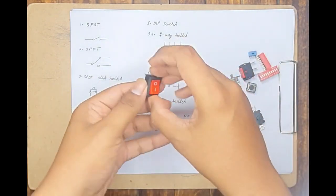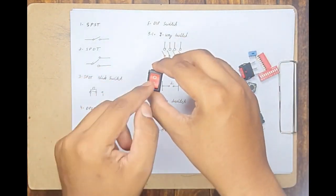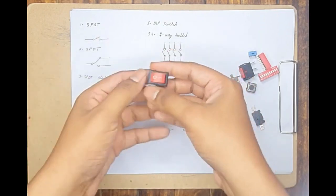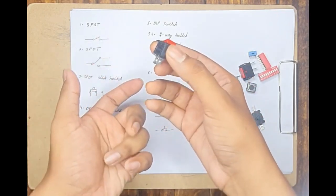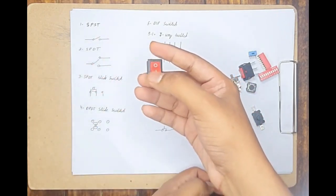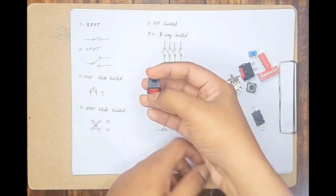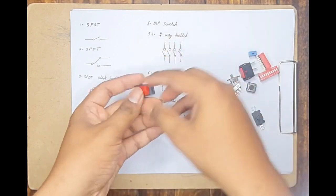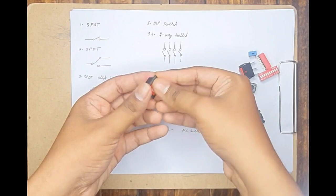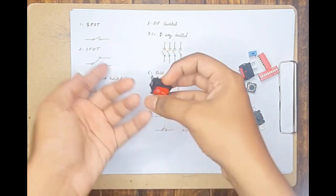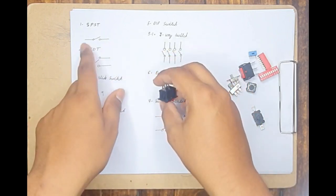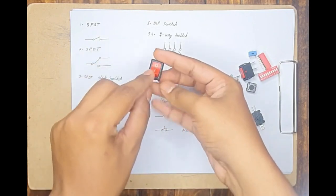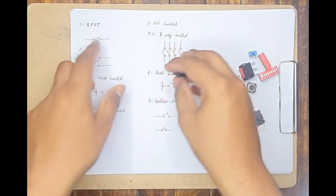The first type of switch I will be talking about is a single pole single throw switch, or an SPST switch. This is a simple on-off switch that is mostly found in our homes as a light switch or a switch to turn on or off a fan.